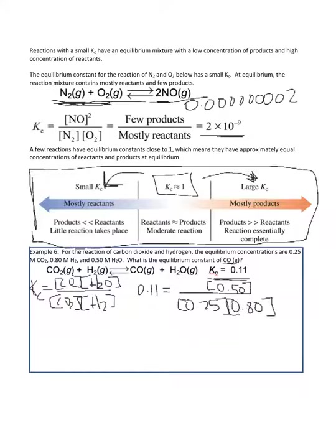The only thing we're missing is the CO — that question should say what is the equilibrium concentration of CO. We have the equilibrium constant. We have only one thing we don't know: the concentration of CO. We know the water concentration, the CO2 concentration, the H2 concentration, and the Kc. So we can solve for the concentration of CO.